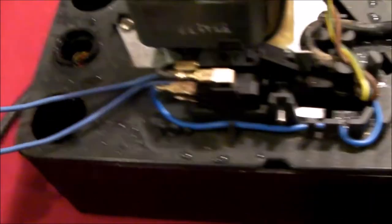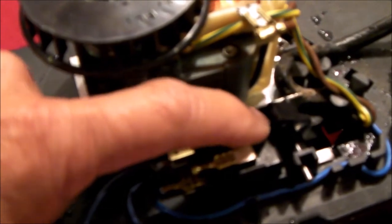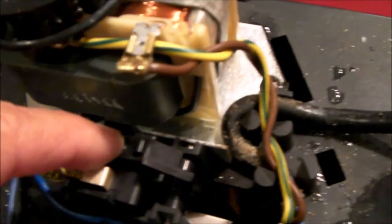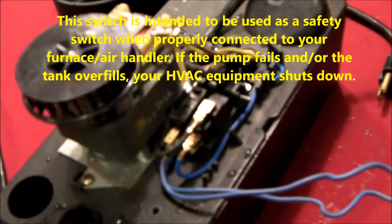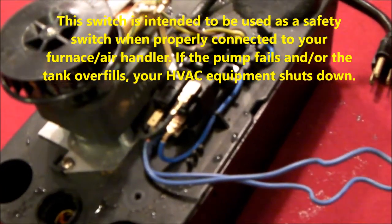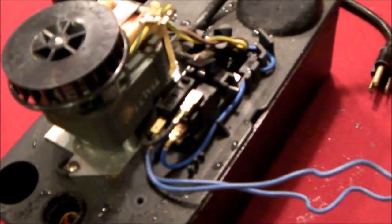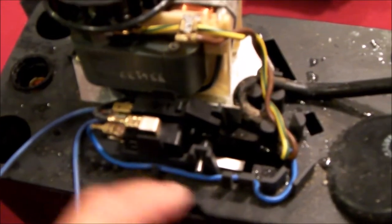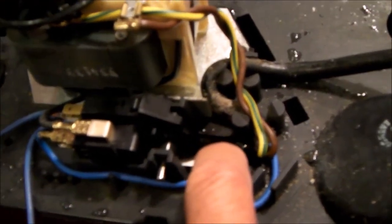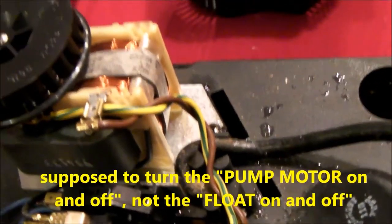You can see that the switch with the blue wires attached to it is this switch in the back. It's just a little micro switch, a mini switch. It's supposed to turn your furnace, in my case furnace and air conditioner, off so that no more water is created.